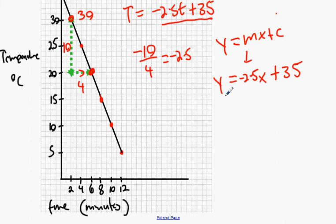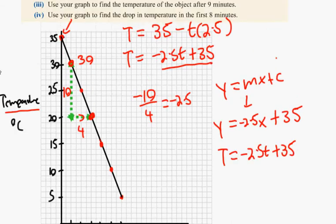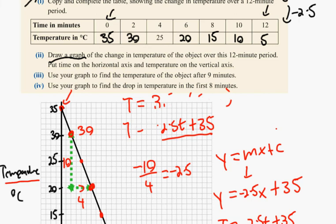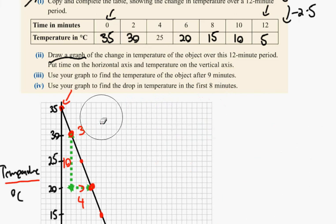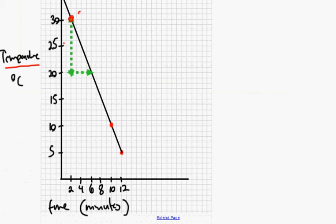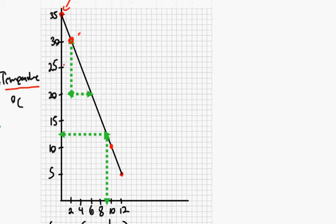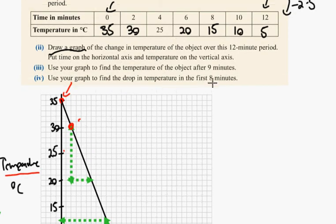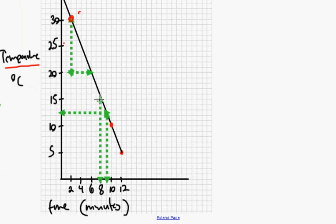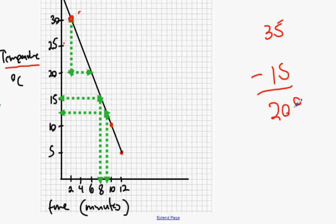Replace y with temperature T and x with time t, and you get the same equation. Now use the graph to find the temperature after nine minutes — go up and across — it's 12.5 degrees. Find the temperature drop after the first eight minutes: eight minutes gives a temperature of 15, so it starts at 35 and ends at 15 — the drop is 20 degrees.